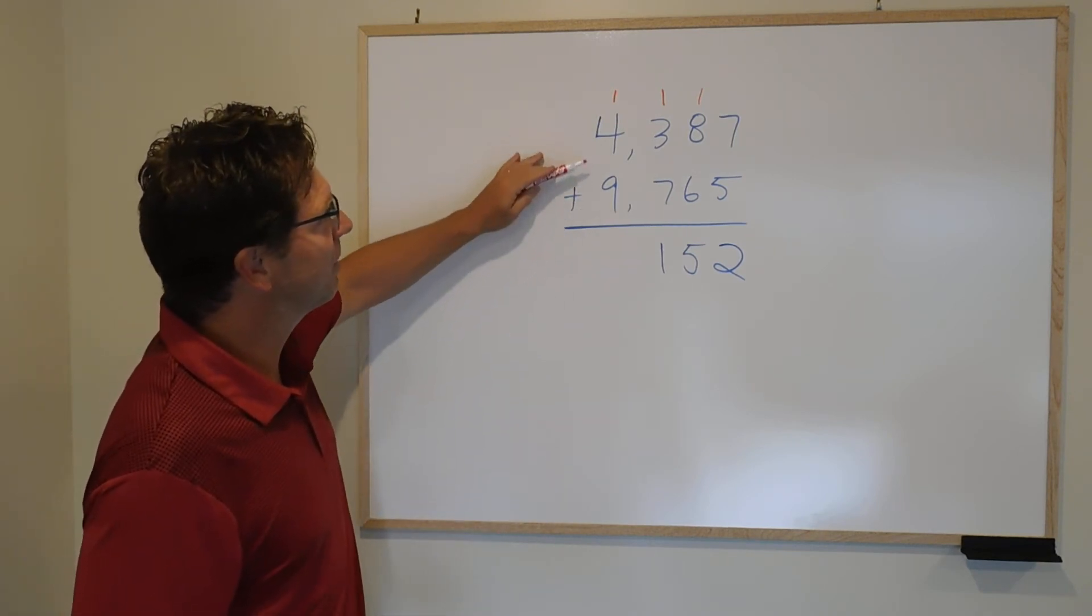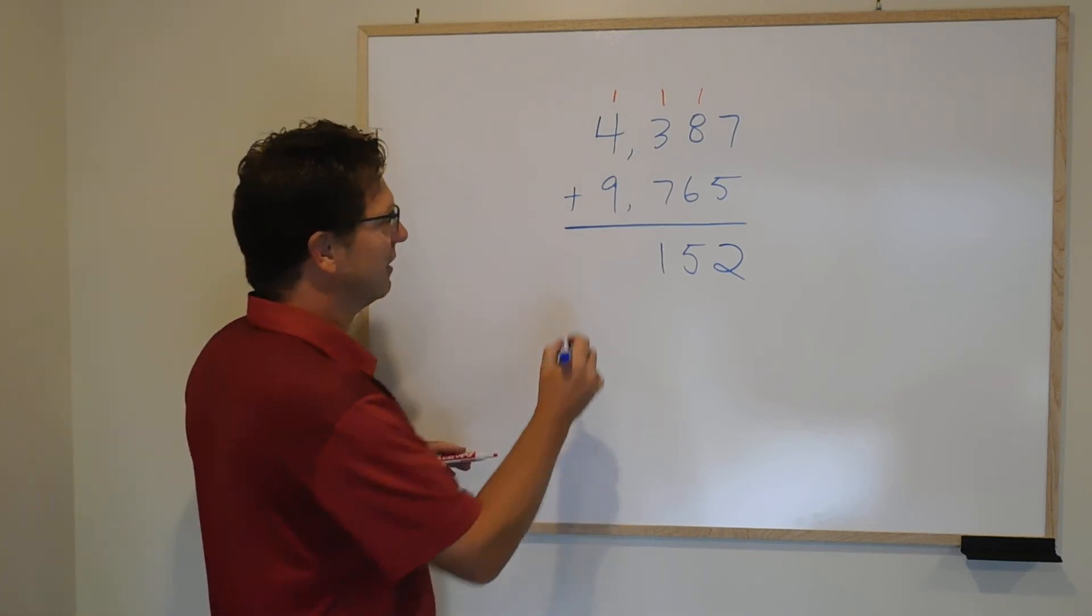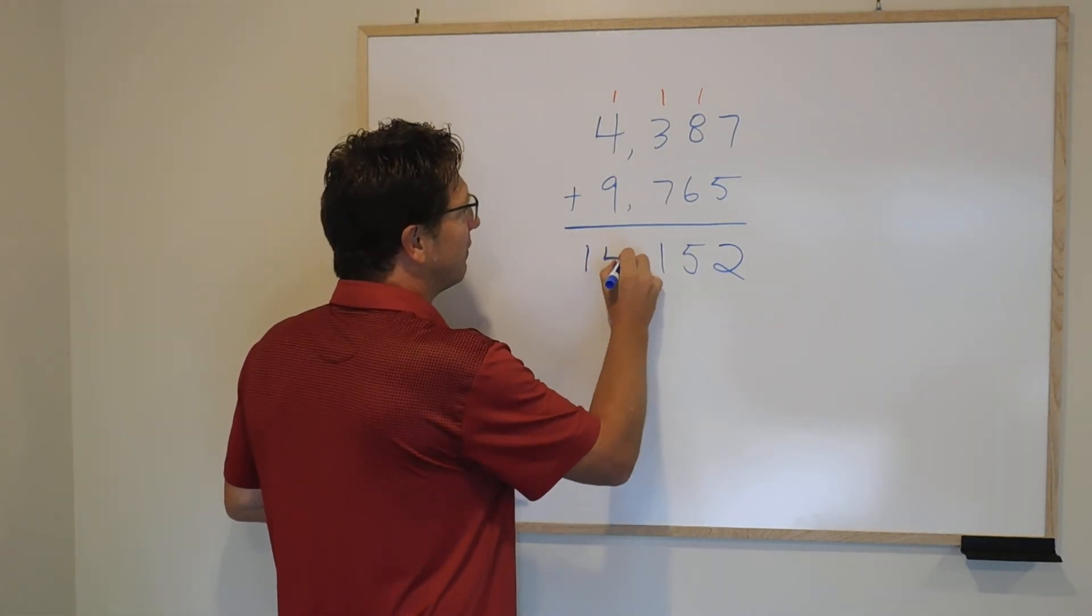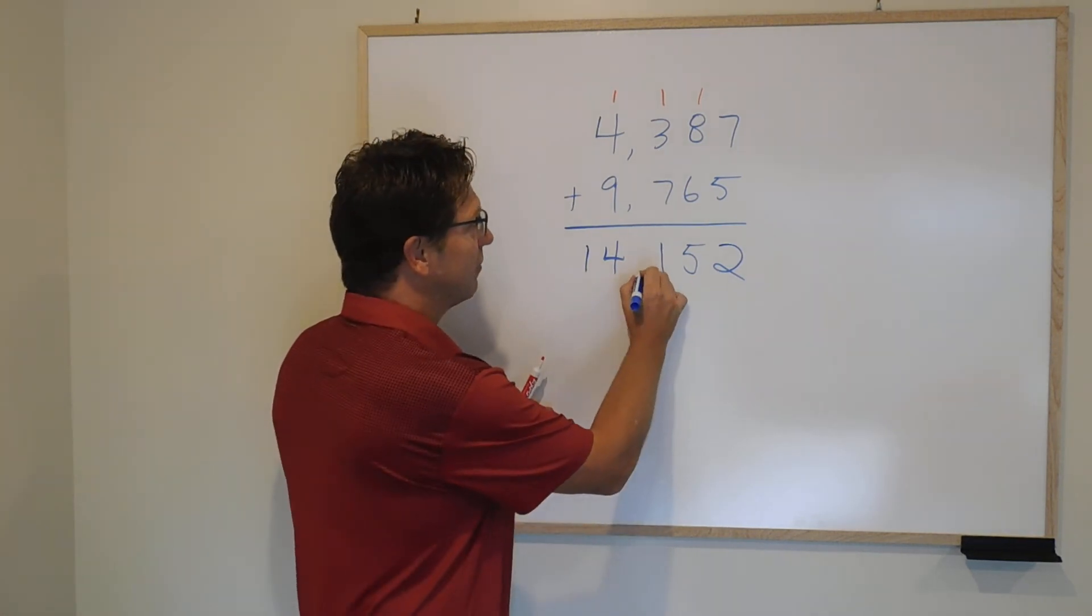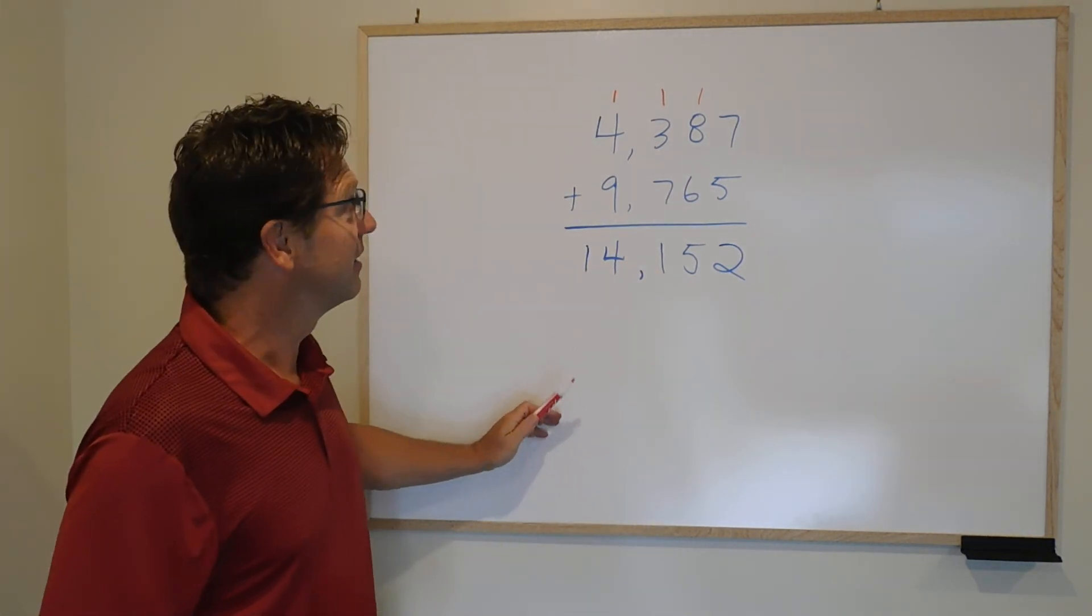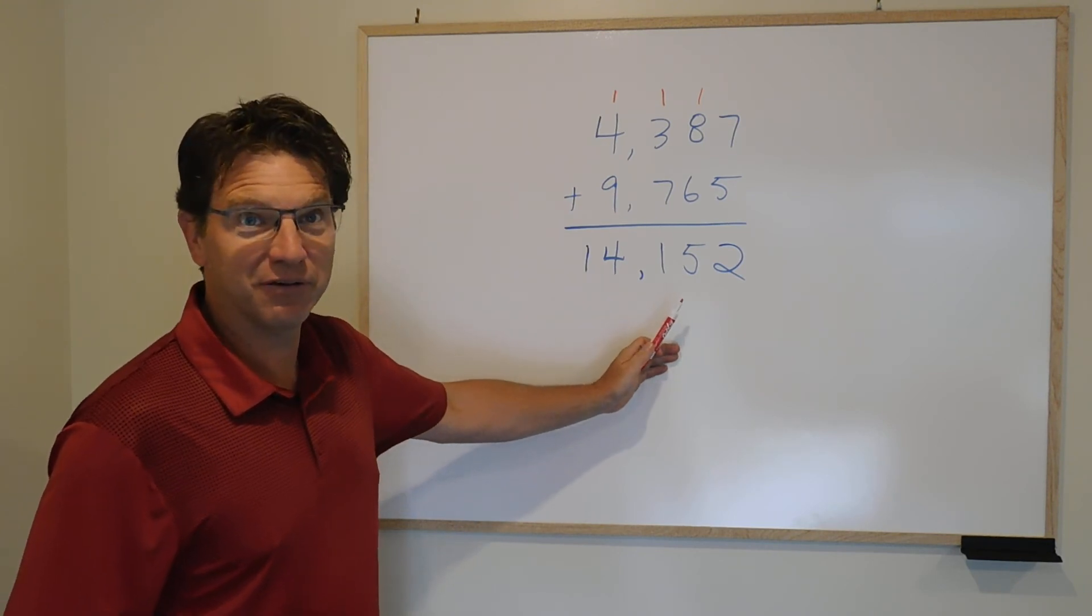And finally 4 plus 9 is 13 plus the 1 is 14 so we would put the 14 right here. Again we have a three digit period of the hundreds. We put the comma in right there so we end up with 14,152.